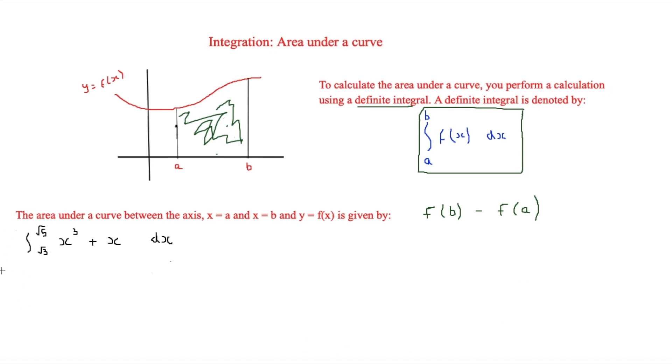And first of all of this question, so we have the integral of x cubed plus x and then this is between root 5 and root 3. So for example if we were looking at this on a curve you could say that as this is at the bottom, this would be root 3. Then b could be root 5. And then you're trying to find the area between these two points.